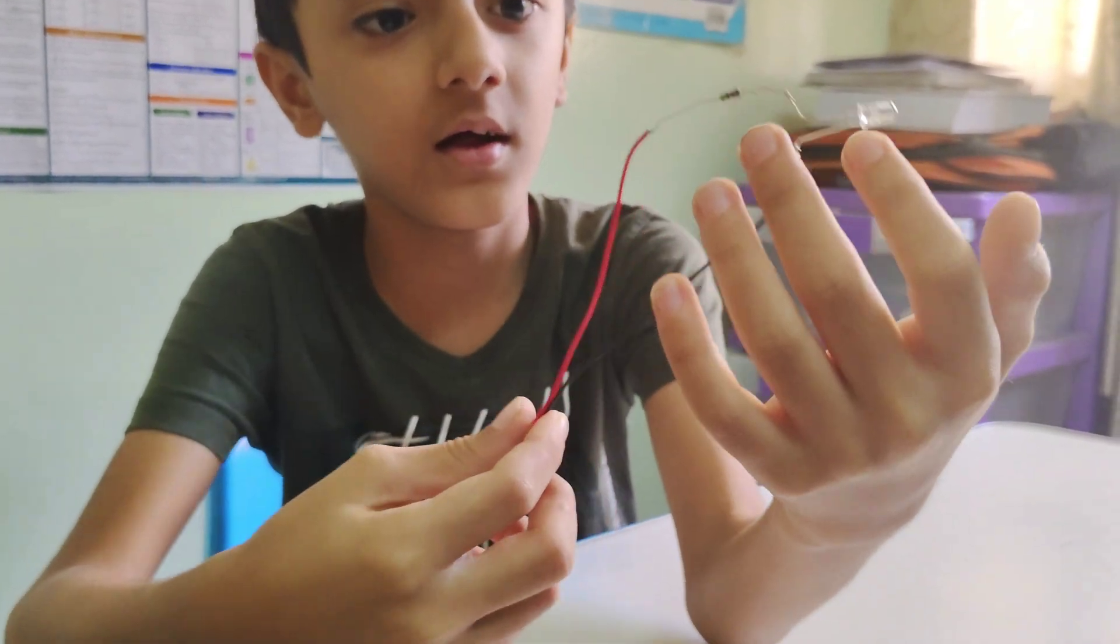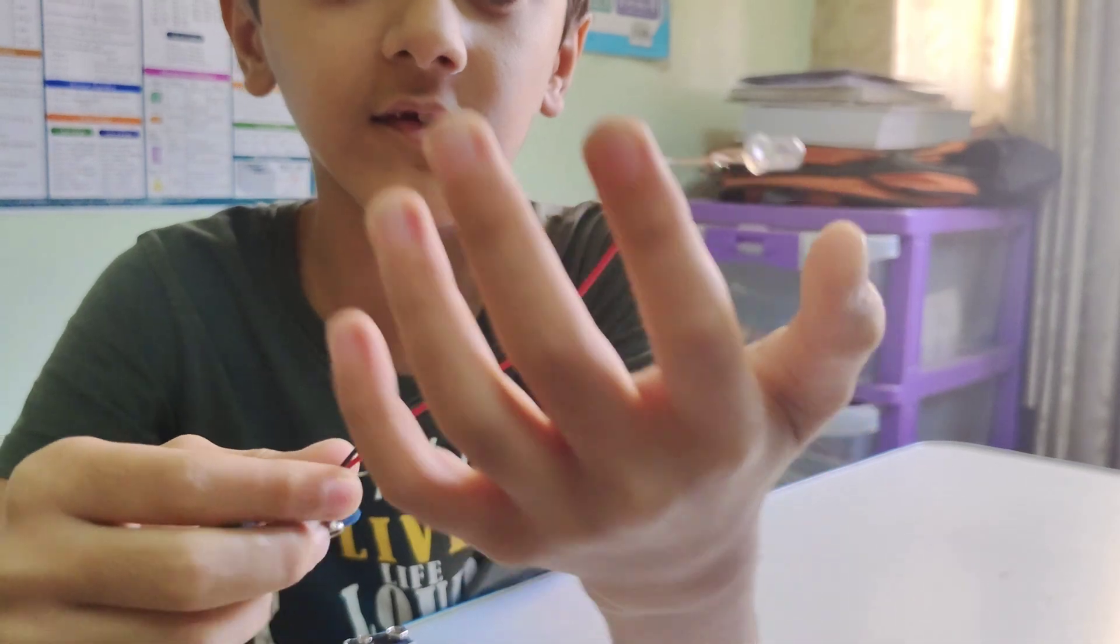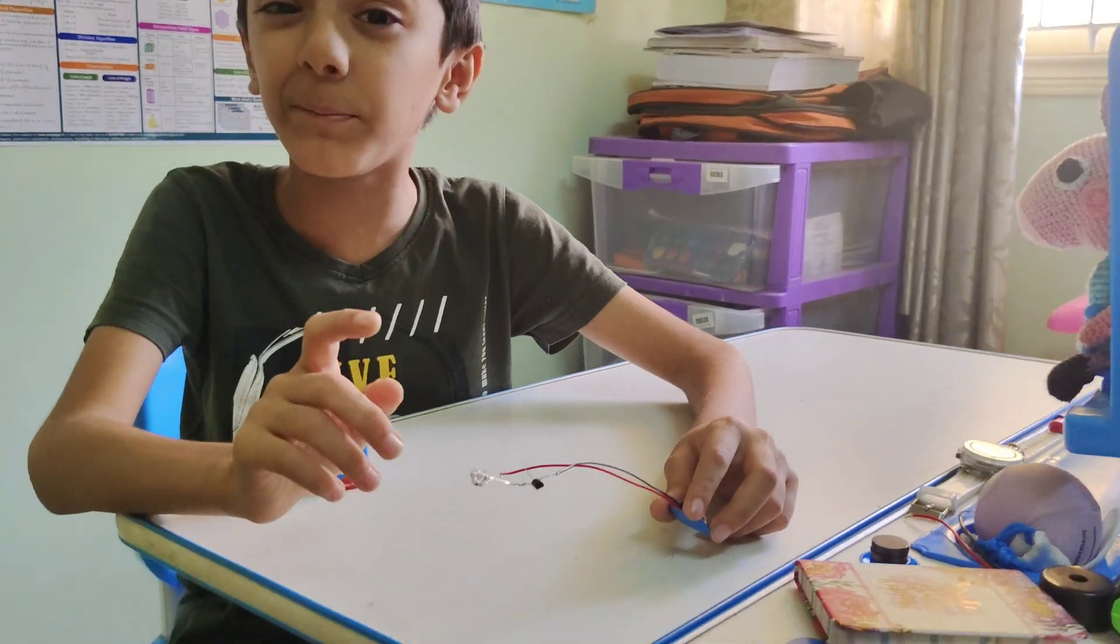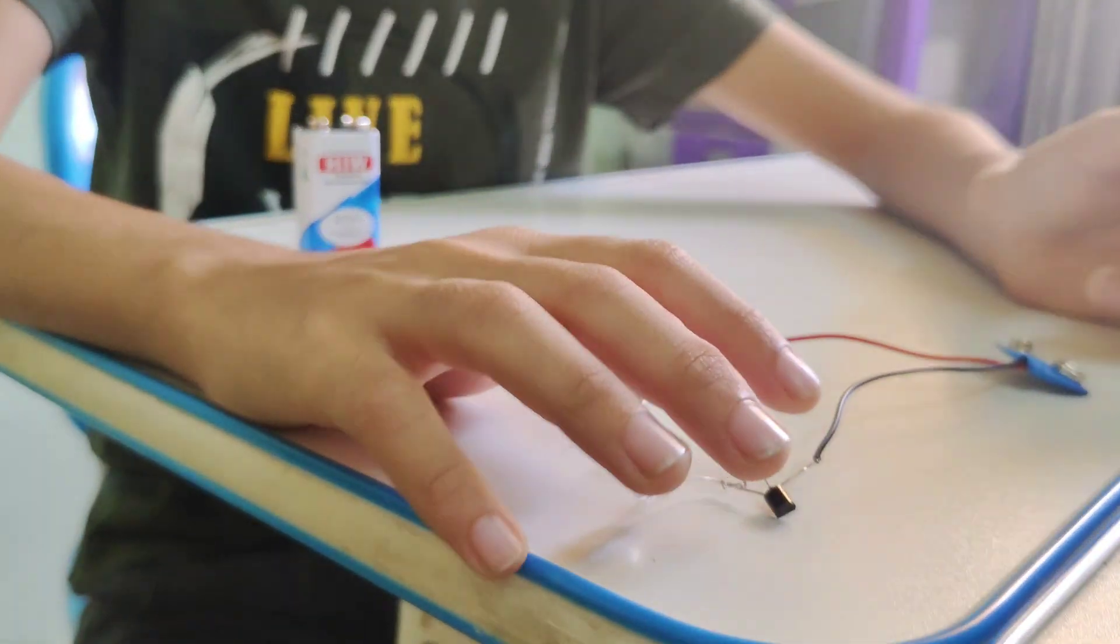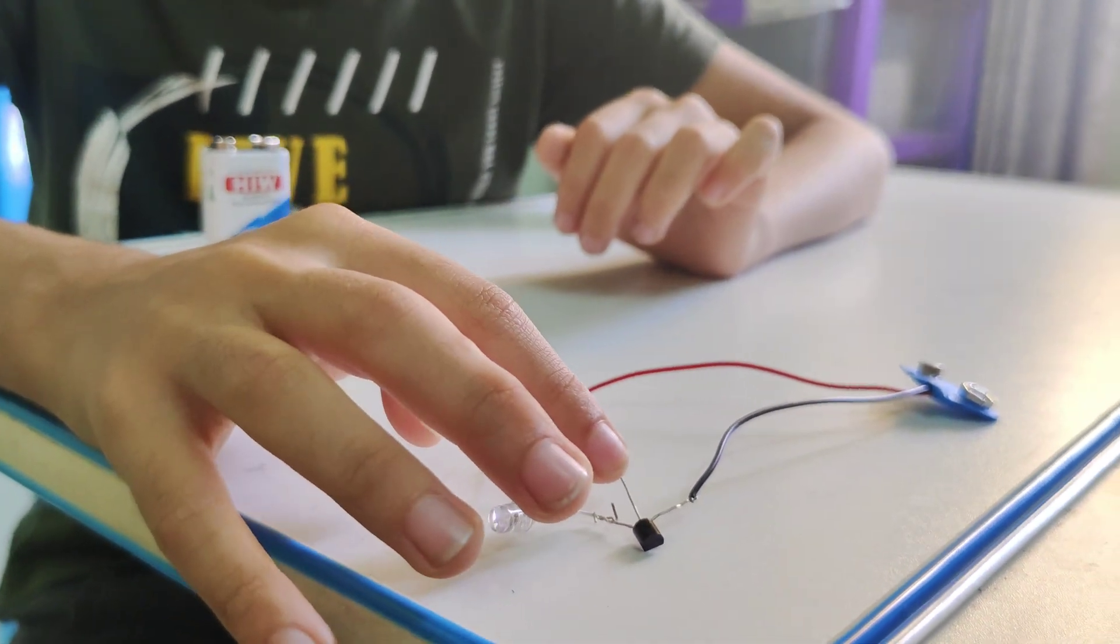Look here. This is the flat surface of the transistor and this is the curved surface. When we keep it down with the flat surface, this is the collector, this is the receiver, and this is the base.